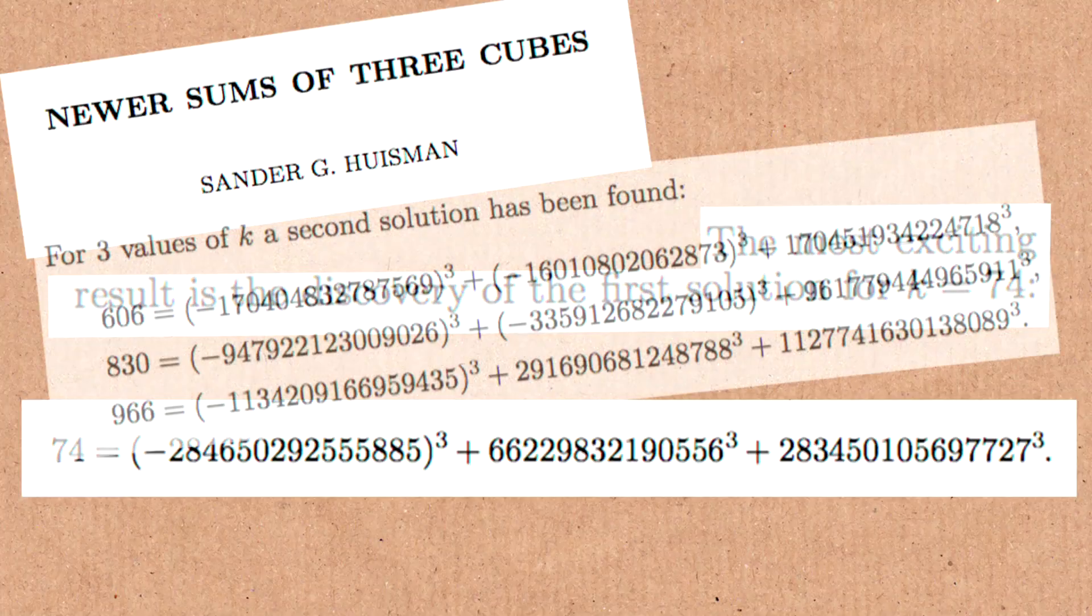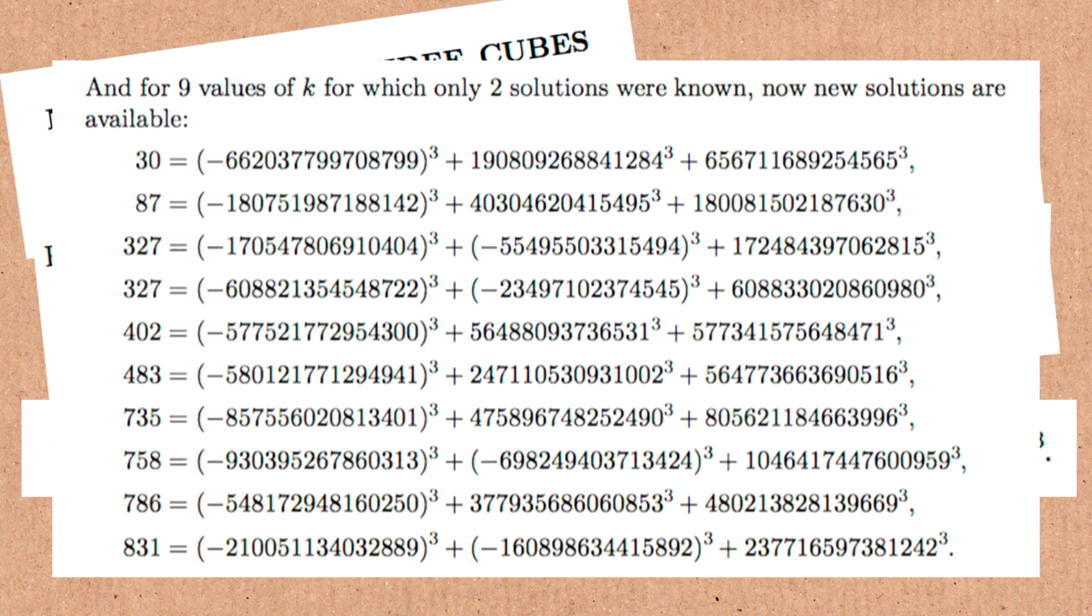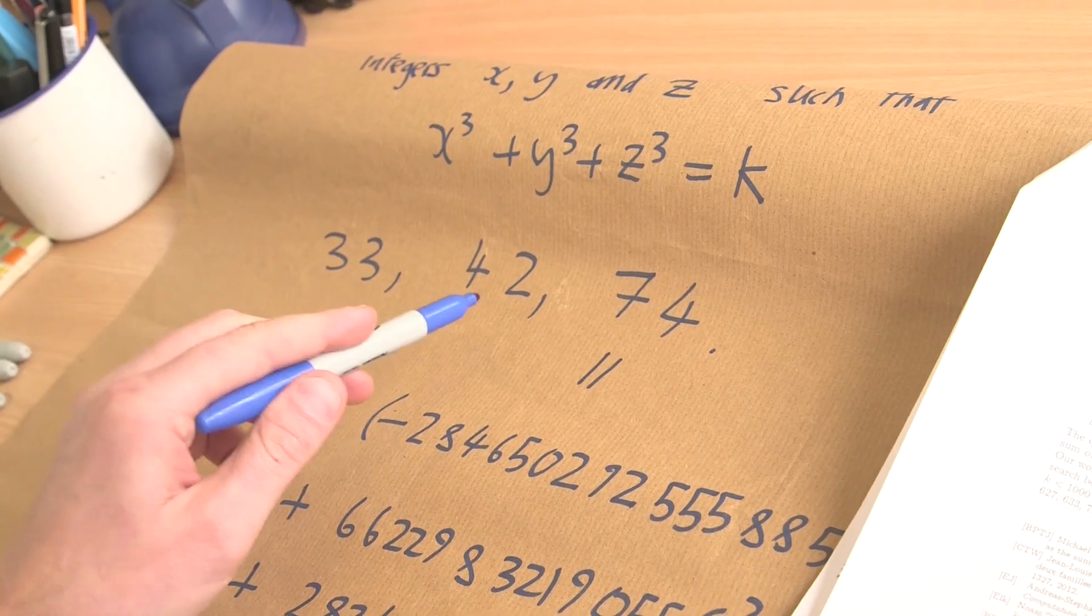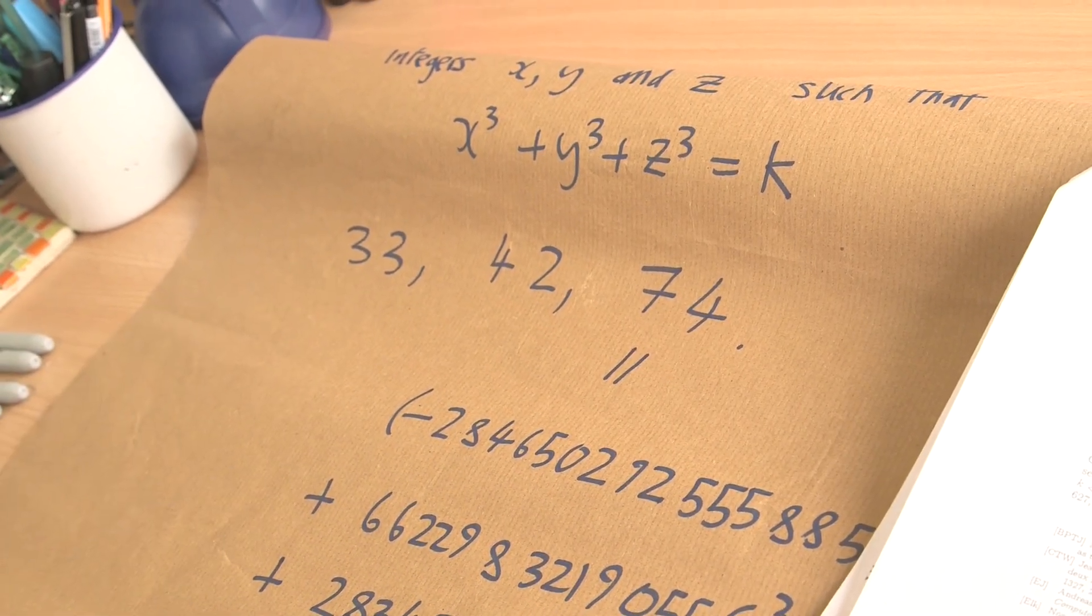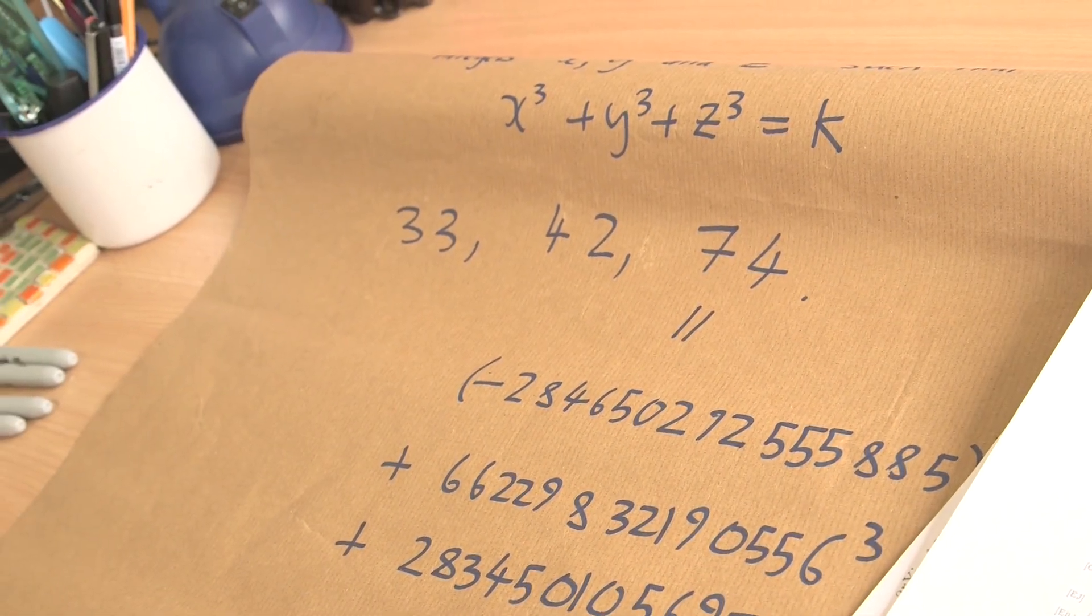He also found some new solutions for larger values of K, but the interesting thing is for K less than 100 we now only have two more numbers to worry about here: the number 33 and the number 42.